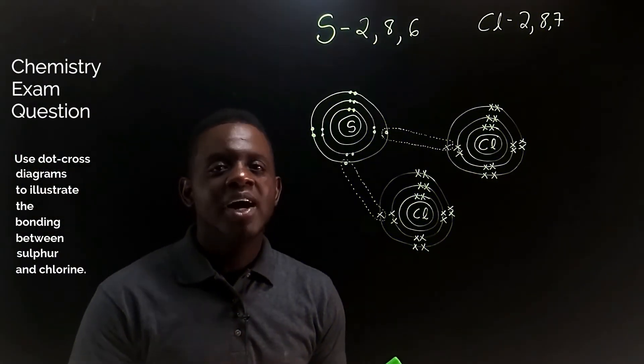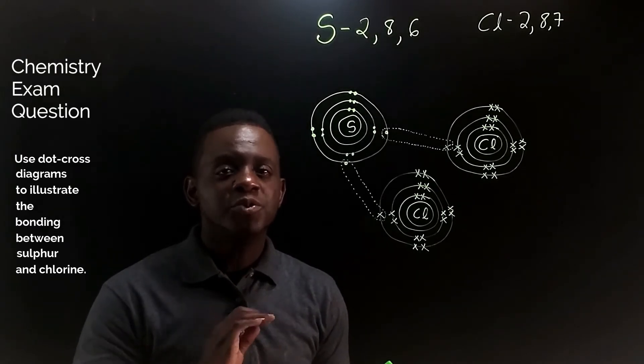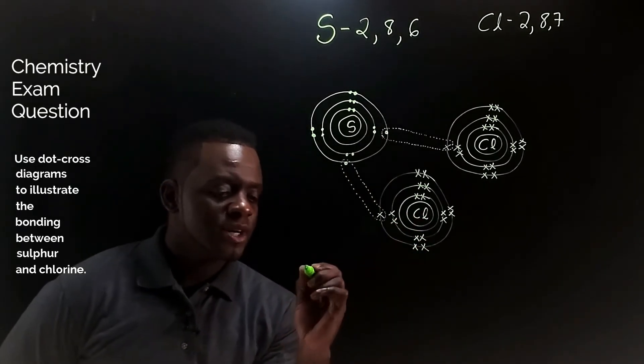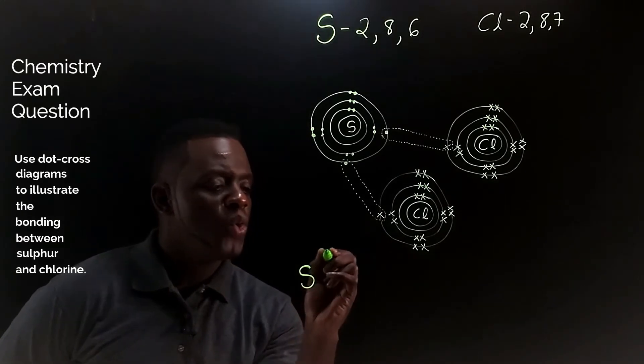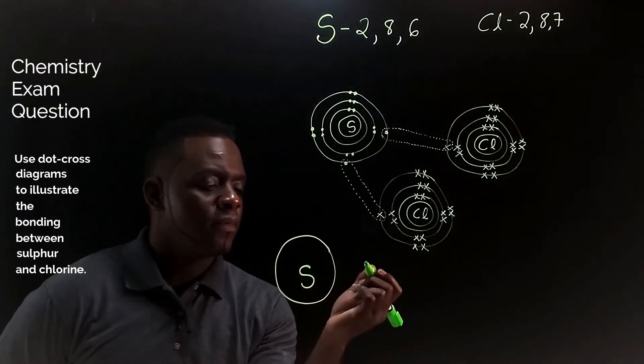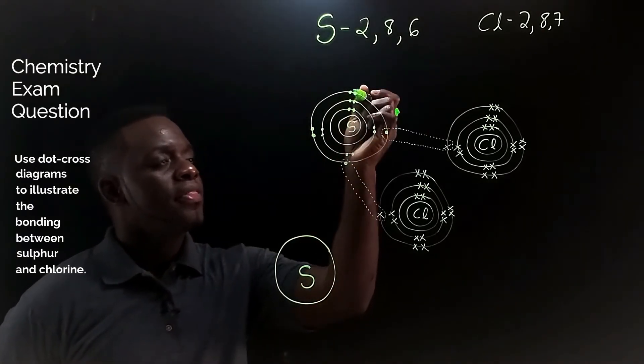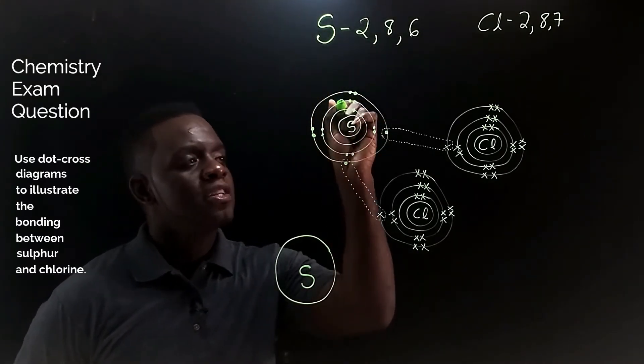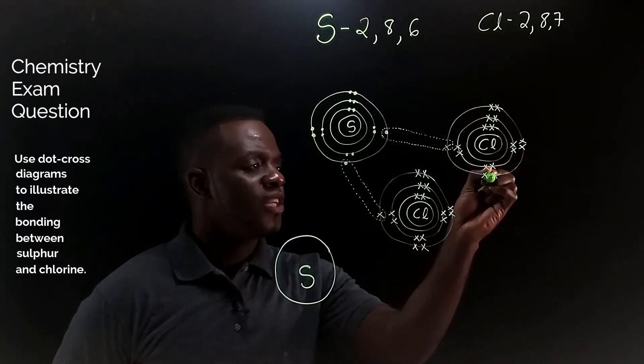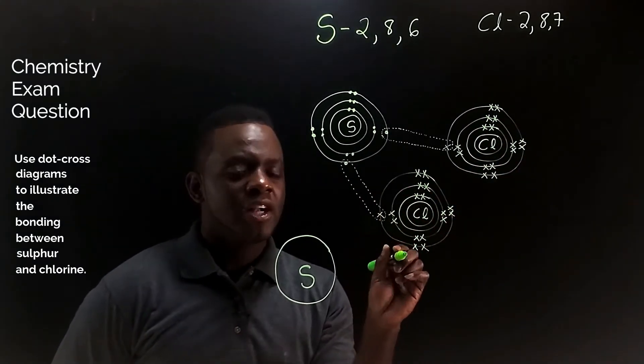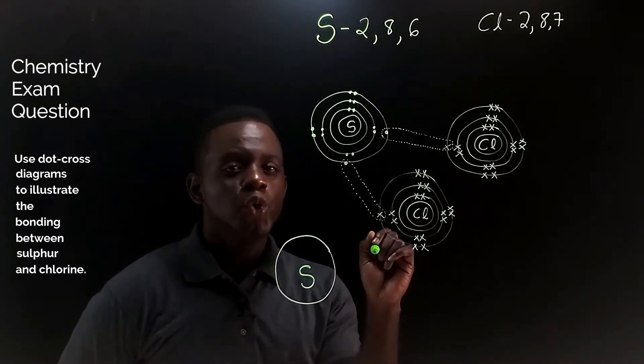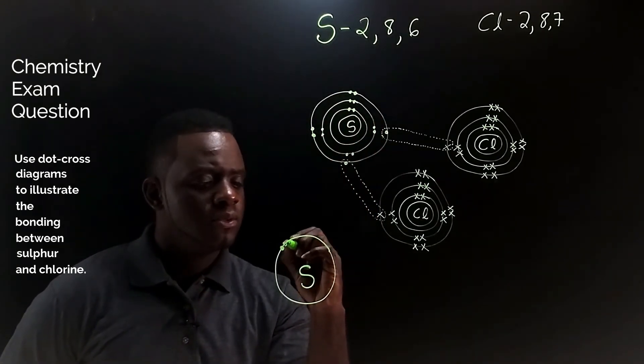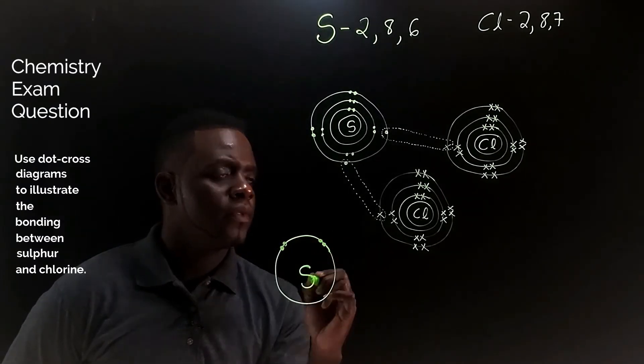And finally, we are ready to draw the diagrams for the compound formed when sulfur bonds with chlorine. Let's start with sulfur and this time we only need to draw the valence shell. Notice that there are two pairs of electrons on sulfur that are not involved in bonding, while there are three pairs on each chlorine atom not involved in bonding. These are called lone pairs. So I will put the two lone pairs on sulfur first.